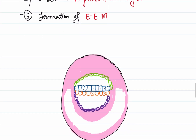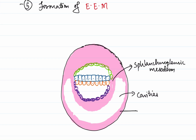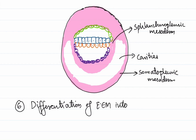In the region of extra embryonic mesoderm, cavities develop that differentiate the EEM into two parts. First, there is an inner part near the embryo known as the splanchnopleuric mesoderm. Then there is an outer part that covers the entire embryo, called the somatopleuric extra embryonic mesoderm. So the sixth step is the differentiation of the extra embryonic mesoderm into an inner splanchnopleuric layer and an outer somatopleuric mesoderm.